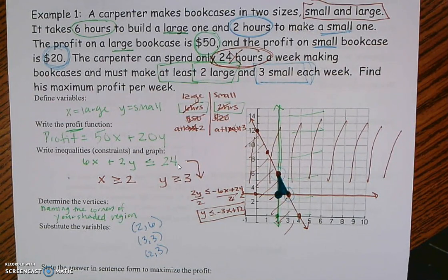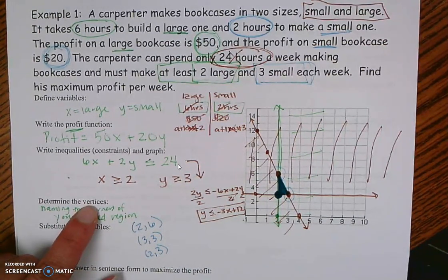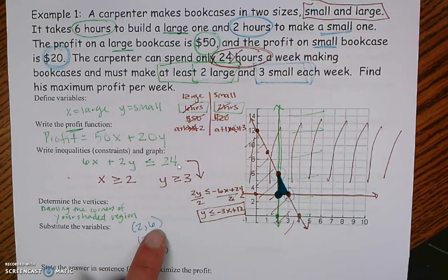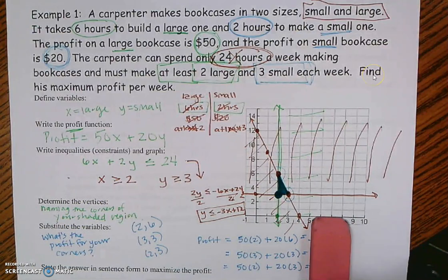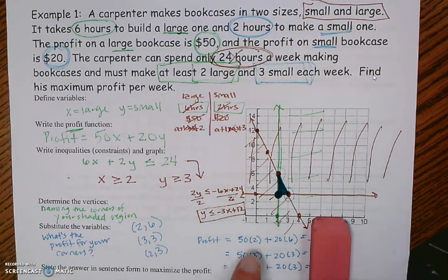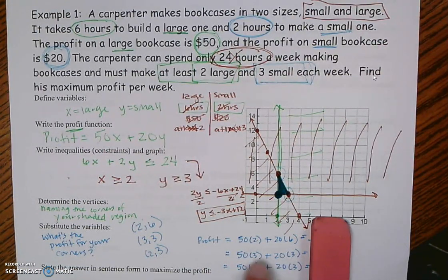The last thing to do is maximize the profit. The problem says to state the answer in a sentence for maximization of profit. Maximizing profit means deciding which combination of large and small bookshelves gets the most money. The combinations always come from the vertices: one option is 2 large and 6 small, another is 3 large and 3 small, and another is 2 large and 3 small. I plug each vertex into my profit equation — 50x plus 20y.